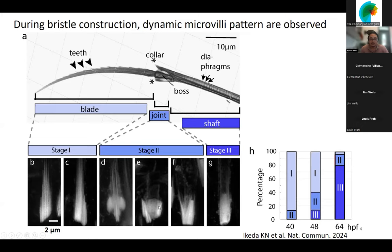The cup-shaped structure is then flanked by a large microvilli that appears, and this microvilli becomes the major microvilli in the later stages, consistent with the profile of the shaft part. We quantified the occurrence of these individual stages and can see that during development from 40 hours post-fertilization to 64 hours post-fertilization, we see a succession of stages from stage one to stage two to stage three, confirming the correct sequential order of the microvilli patterns.